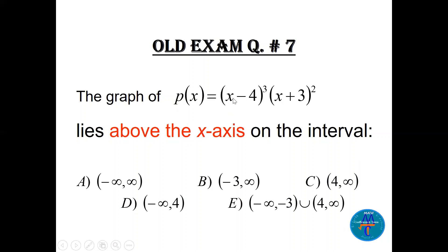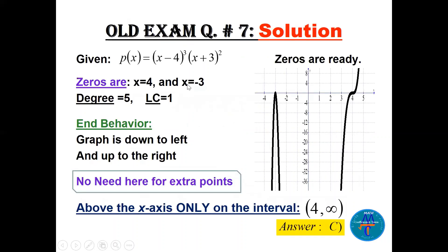At x = −3 the multiplicity is 2 (even), so the graph is tangent; at x = 4 the multiplicity is 3 (odd), so it crosses. The end behavior is down to the left, up to the right. Sketching: the graph goes down, is tangent at −3, and then continues crossing at 4 going upward — similar to a cubic shape.